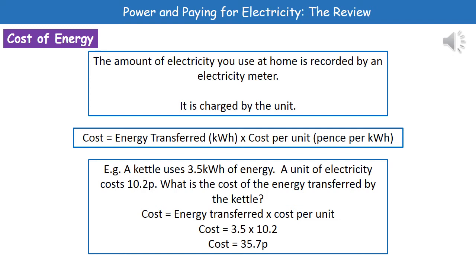One thing to bear in mind is that you could have a question worth 3 marks that uses this calculation combined with the one to calculate the energy transferred. The general rule for calculations is: if it's worth 2 marks, it only has 1 stage to it; if it's worth 3 marks, there's probably a 2nd stage, meaning you use your answer from the first calculation in the second one.